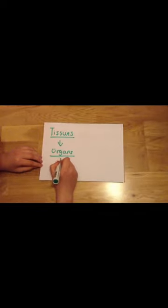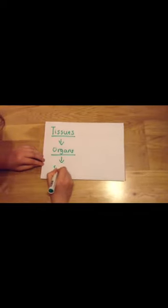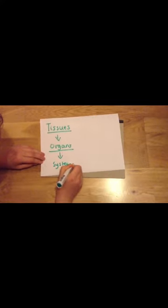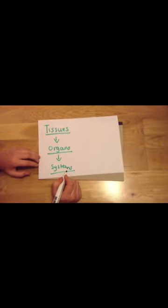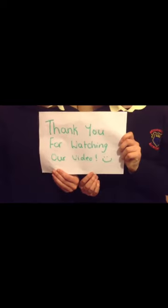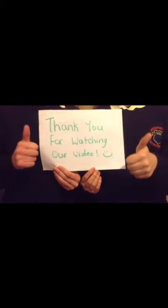Systems. A system is a group of organs working together. For example, the digestive system consists of the esophagus, the stomach, the intestines, and other organs. Thank you for watching our video from Michelle and Lucy.